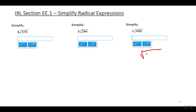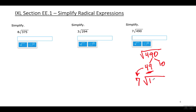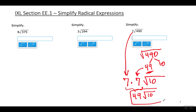The last example: 7 times the square root of 490. Break 490 into 49 times 10. The square root of 49 is 7, so that 7 goes outside the radical sign. The 10 stays underneath. There was already another 7 outside the radical sign, so multiply the two 7s together: 7 times 7 is 49. Final answer: 49 square root of 10. That concludes the lesson for this IXL section EE1.